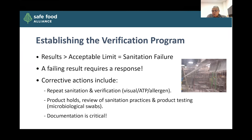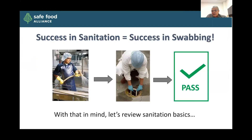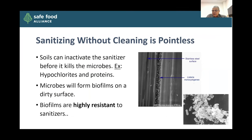If there is a potential for product contamination, we could have a product hold. Review those sanitation practices and product testing if needed. If our micro numbers indicate there's an issue, we may have to do that. As with our environmental monitoring program, documentation is critical. Success in sanitation really is going to be success in swabbing.